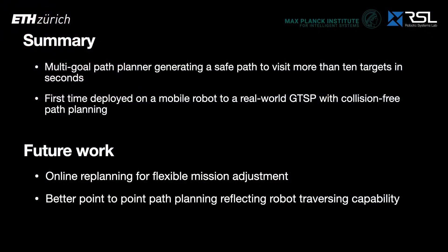In summary, we proposed a multi-goal path planner for mobile robots solving the GTSP with collision-free paths that can generate a safe path to visit more than 10 targets in seconds. To the best of our knowledge, this is the first time a global planner is deployed on a mobile robot for a real-world GTSP with collision-free path planning. Future work includes incorporating online re-planning for more flexible mission adjustment and better point-to-point path planning reflecting robot traversing capability.